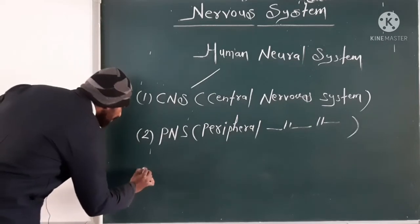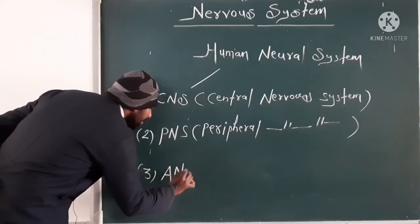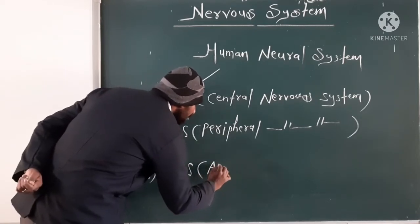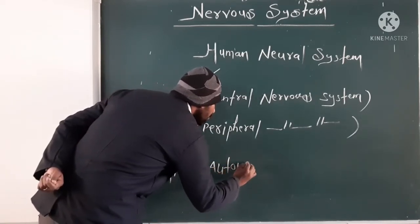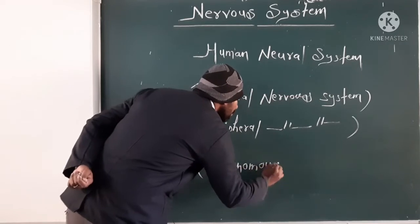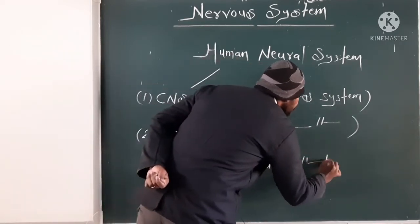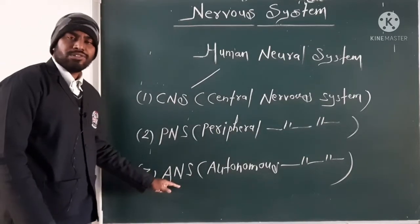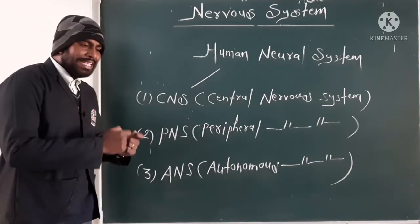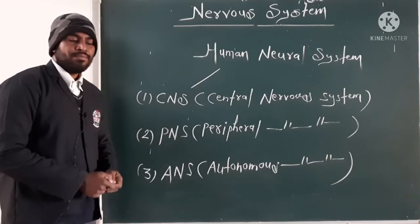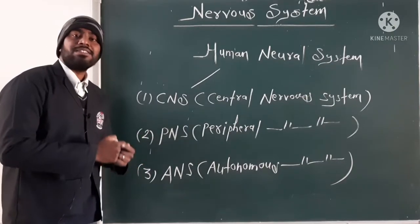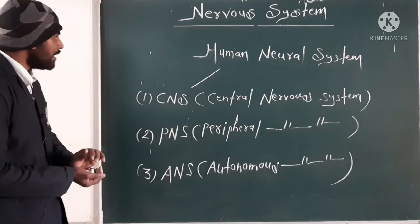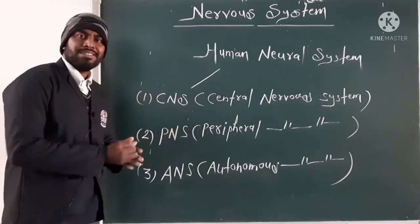The third part is called ANS, or autonomic nervous system. The autonomic nervous system is responsible for maintaining and functioning of reflex actions — that means involuntary actions in the body. So these three different types of neural systems are present in the human body.